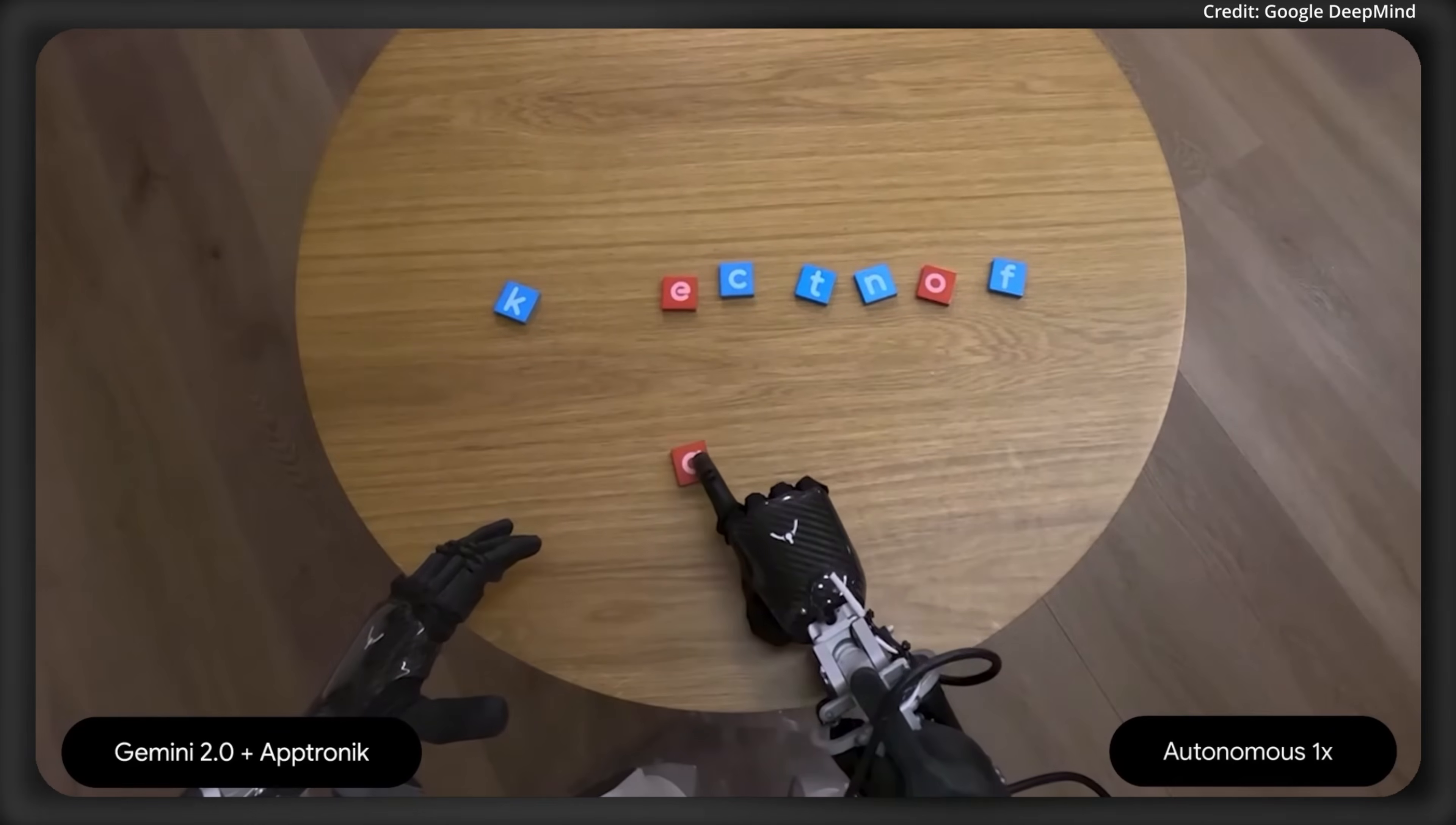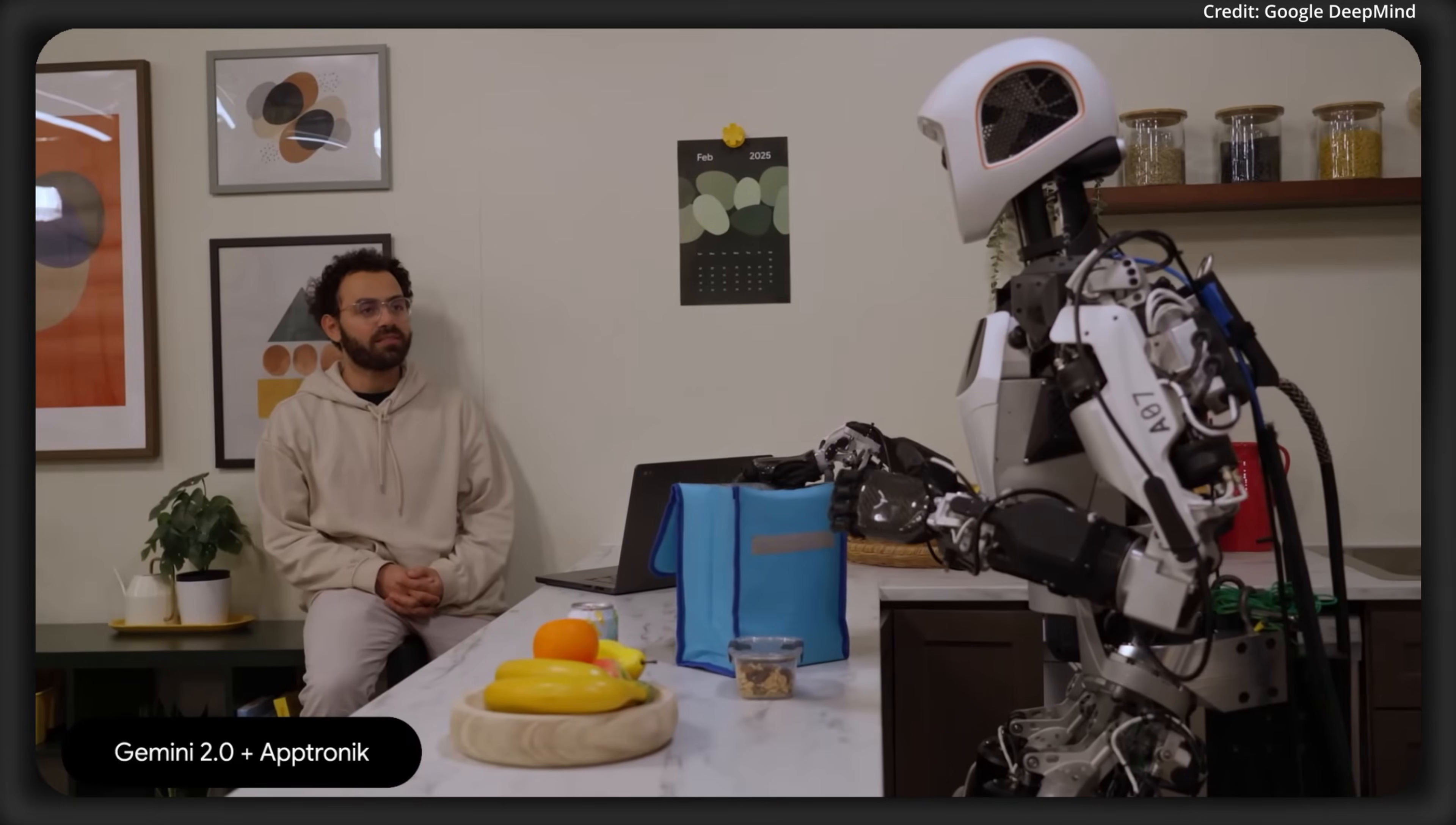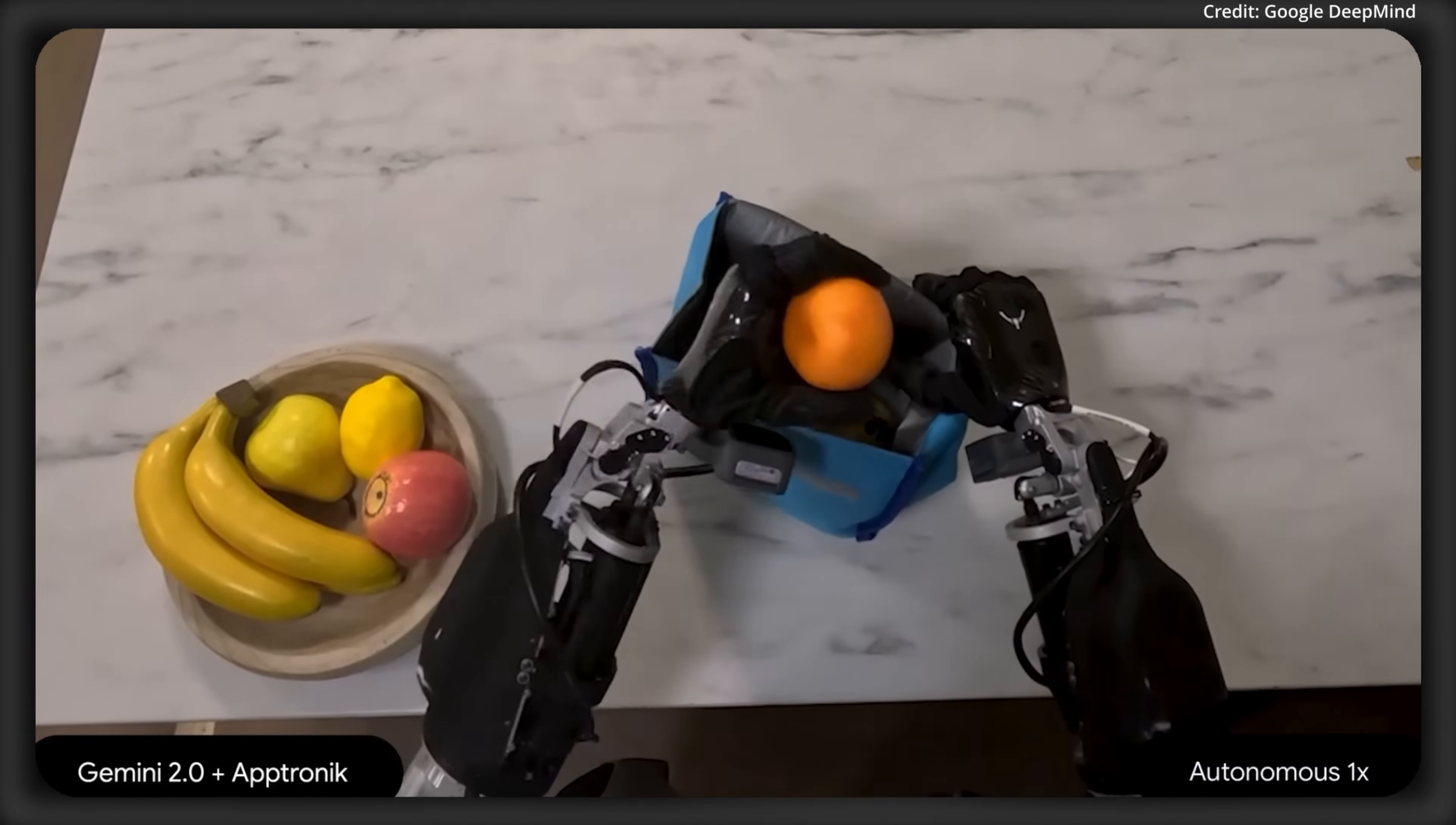And it reasons to spell out ace. And in real time, it figures out its robot trajectories to line these up in the correct order. In another example, it's told to pack a lunch. And it has to use its vision language action model to determine what's food, what to put inside the box. It also determines what type of force control to use.